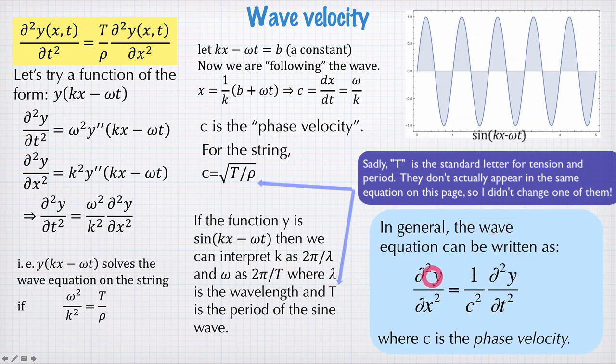In general, the wave equation can be written like this, where instead of the T divided by ρ, which is specific to the wave on the string, in general this factor out the front here is 1 divided by the square of the phase velocity.